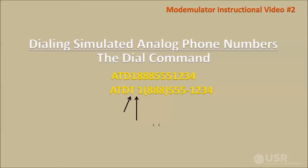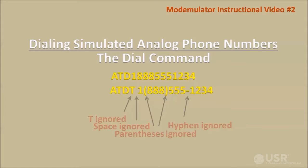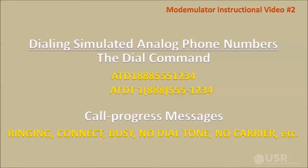The dial command sent by the legacy application might contain some dial modifiers. The Modemulator will ignore the dial modifiers and execute the command as if they weren't there. As the dial command is executed, the Modemulator will return call progress messages to the legacy application, just as an analog modem would.